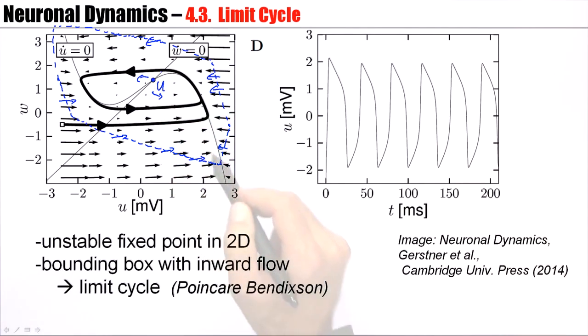But, if inside of my bounding surface there's only one fixed point, and this is unstable, then the only possibility for the system to keep moving is to move in a circle, to move on a limit cycle. And this is the famous theorem of Poincaré-Bendixson.